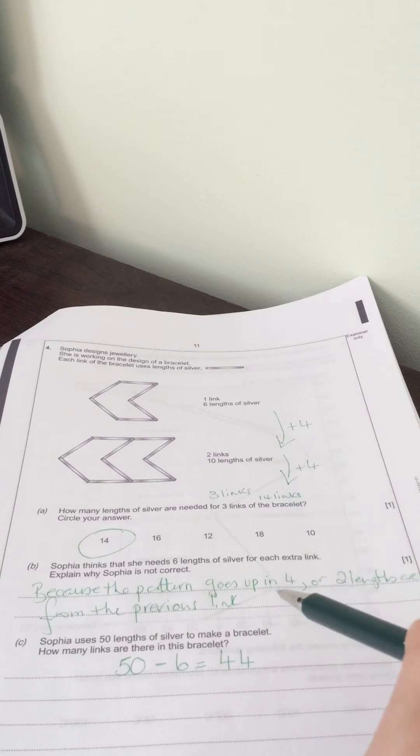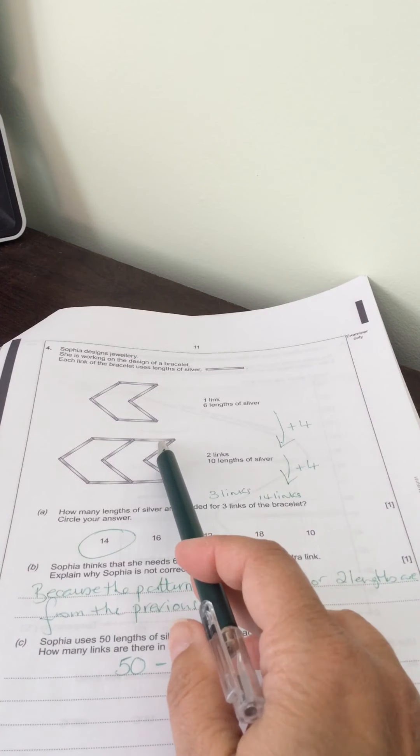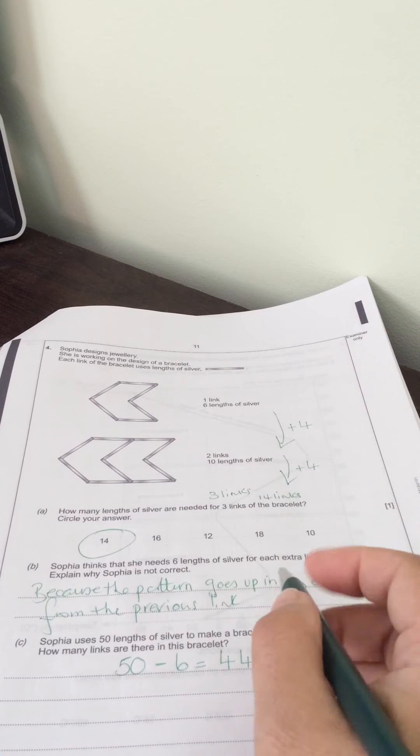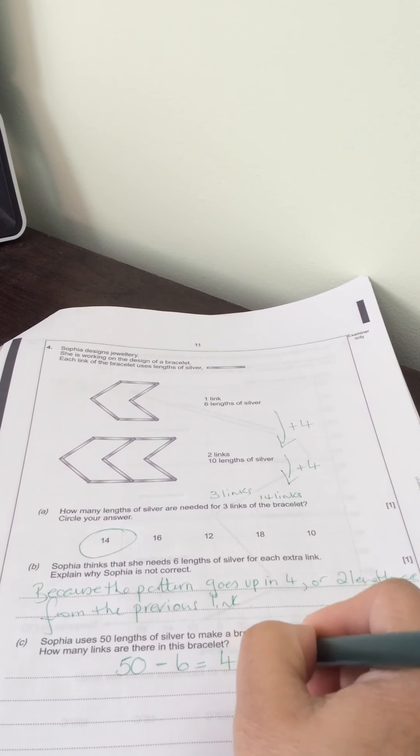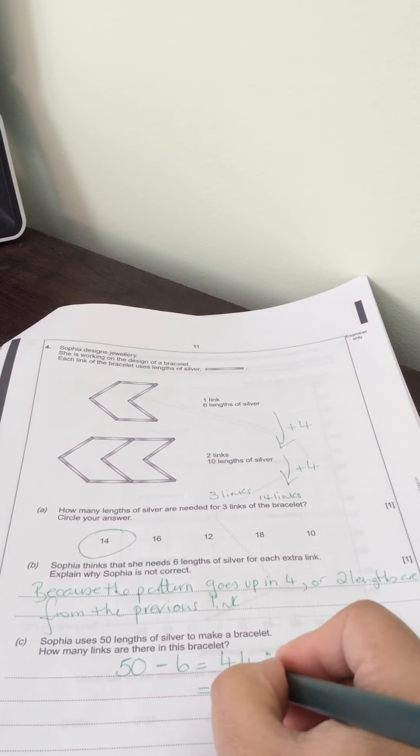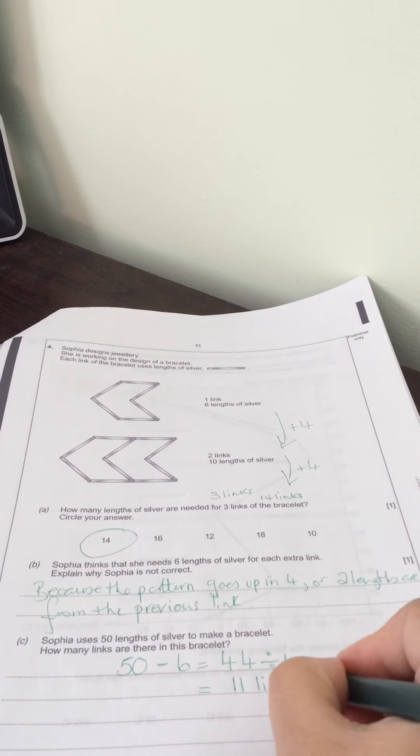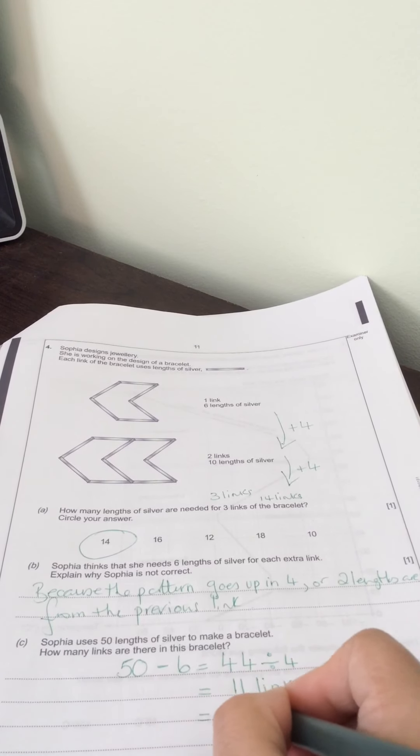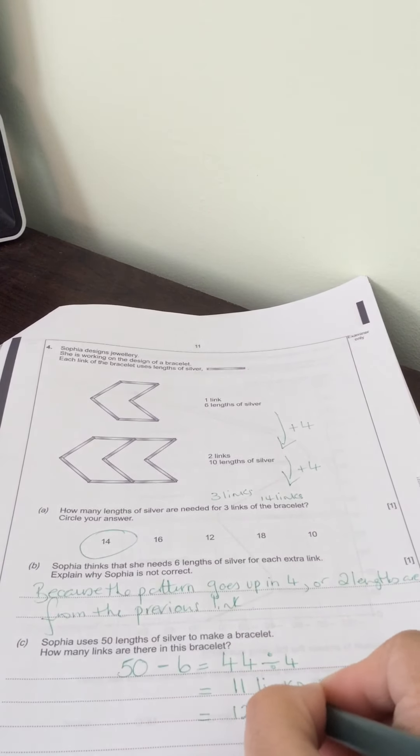Now we know those extra lengths are going to be an extra four. So if we divide by four, then we get 11. So that means we've got 11 links, plus the first link. So in total, there are 12 links on this bracelet.